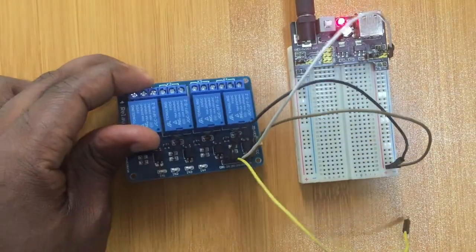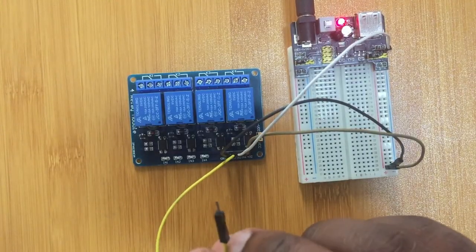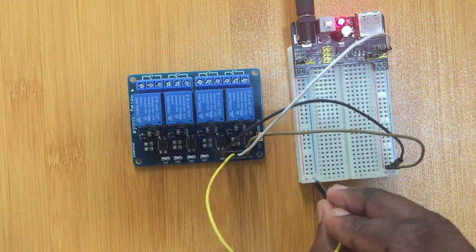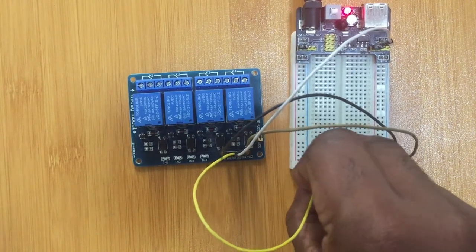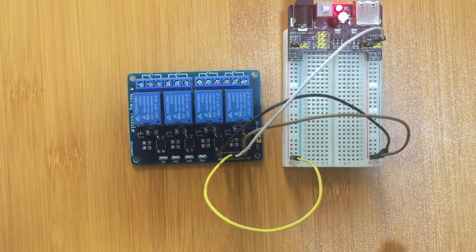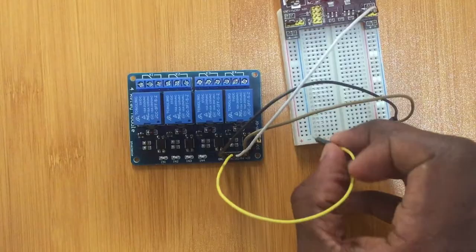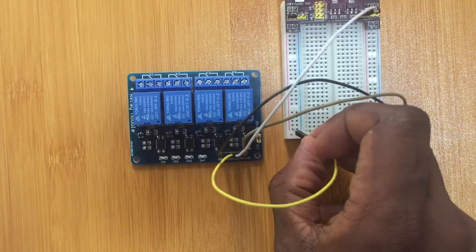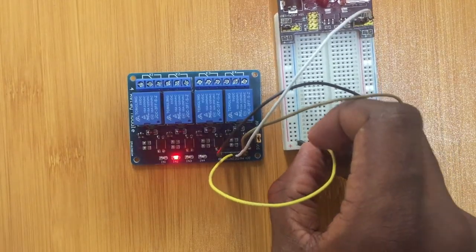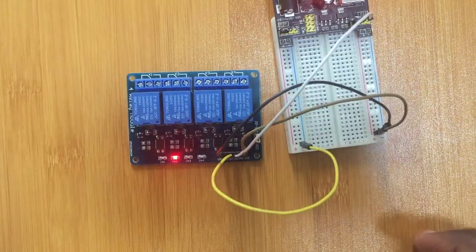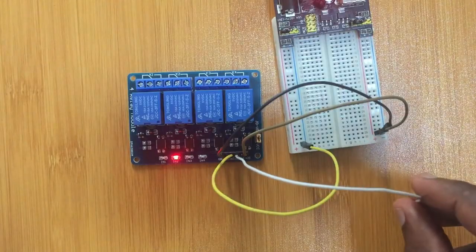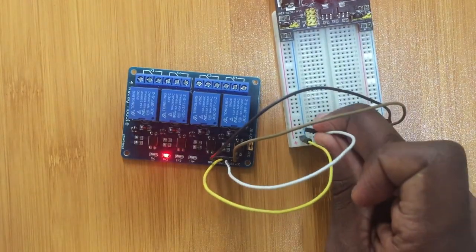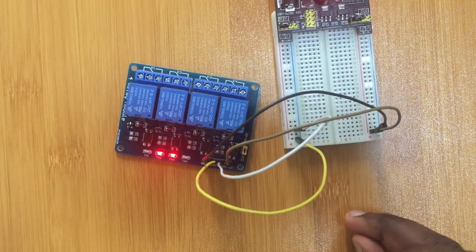For this relay module, you observe that, for example, if I begin with relay two, if I put on the positive here, nothing is happening. But if I put on the ground, it turns on. I put here, nothing. Put on the ground, turns on. The same happens for this one. If I put here, nothing. The ground turns on.